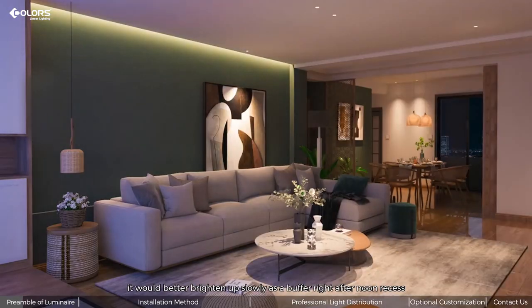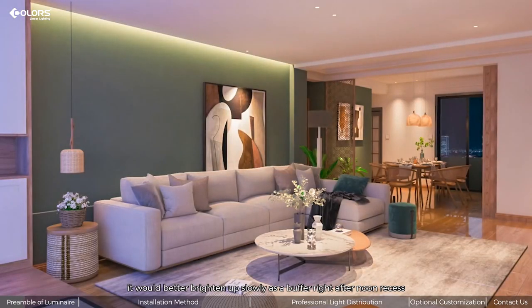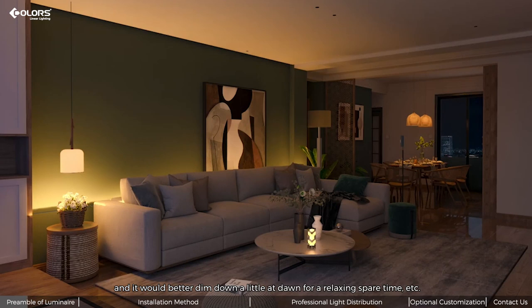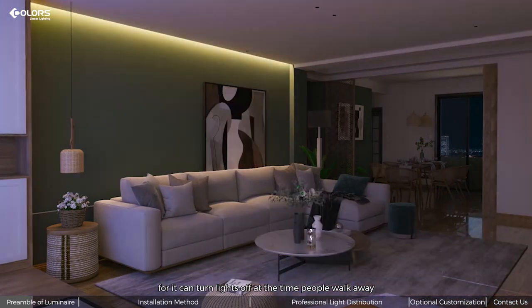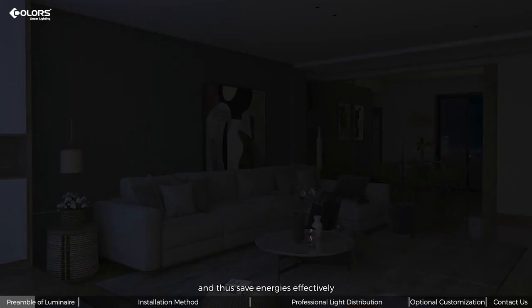For example, we would better brighten up slowly as we wake after afternoon recess, and we would better dim down a little at home with relaxing spare time. How can we use light more economically? Smart lighting system may be the way out, where it can turn lights off when people walk away and thus save energy effectively.